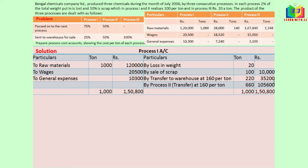Transfer to next process: 220 tons. Transfer to next process: 660 tons. The amount is similarly classified and posted. Rate per ton over each process — divide the amount by tons to get the cost per ton.